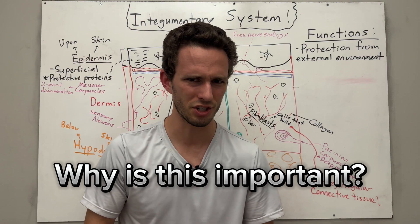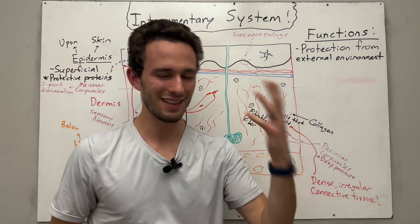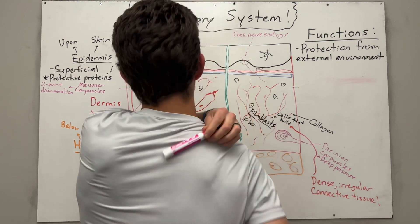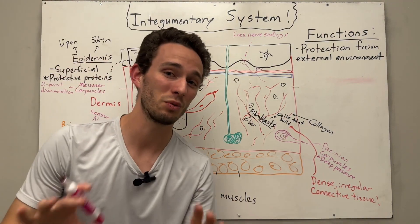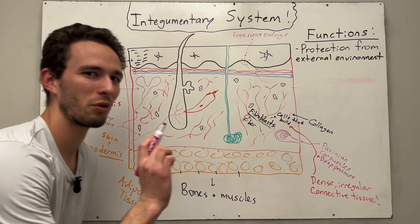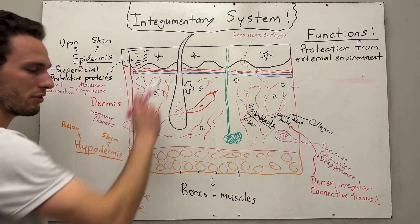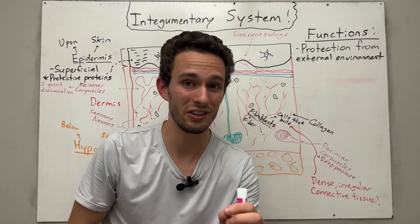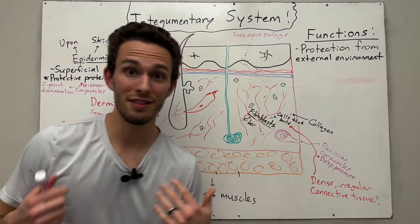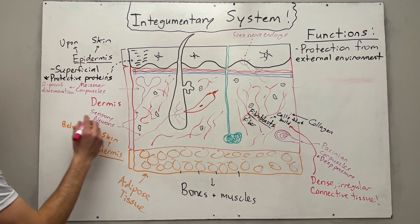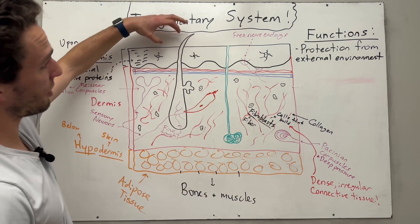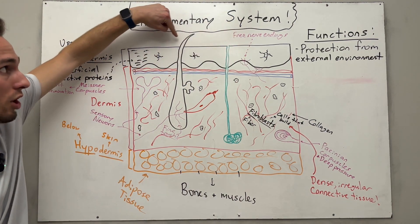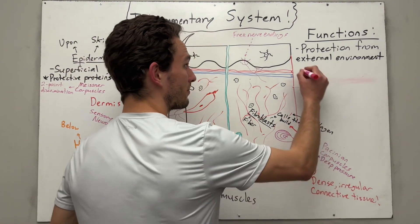Why is this important? Because structure fits function. You have more Meissner corpuscles in your fingertips but fewer in your back because when you're manipulating things with your fingers you need to feel what you're touching. You also have sensory neurons wrapped around the base of your hair follicle, so whenever your hair tilts ever so slightly you'll feel it. If a spider was crawling on your skin, it might touch your hair, tug on it, and you'd feel it. So one of the main functions of your skin is sensation.